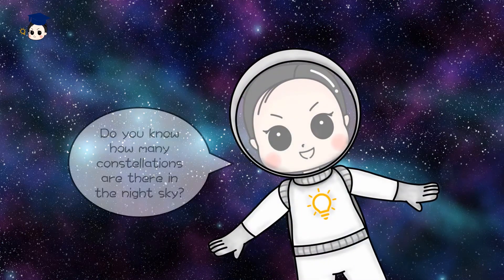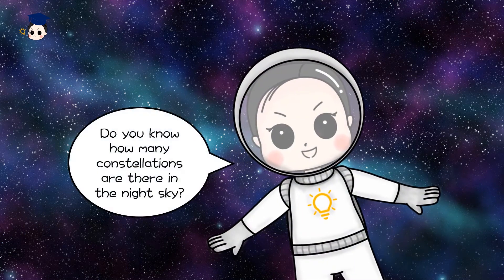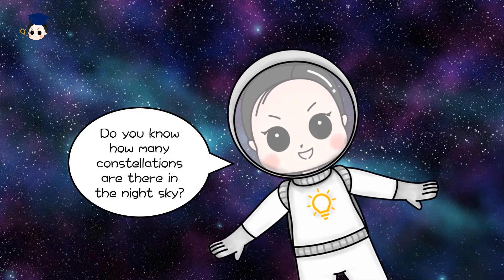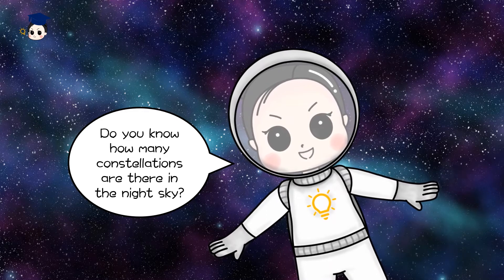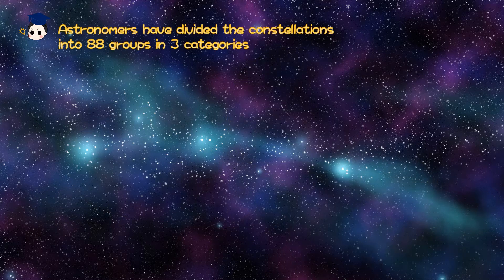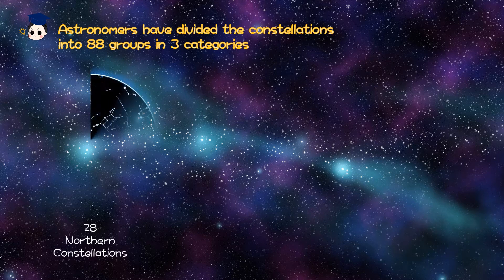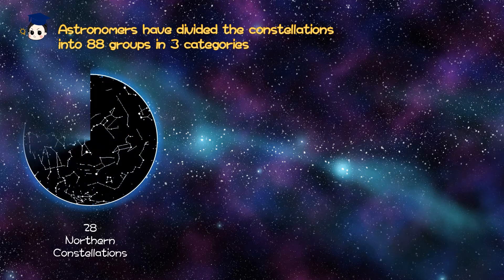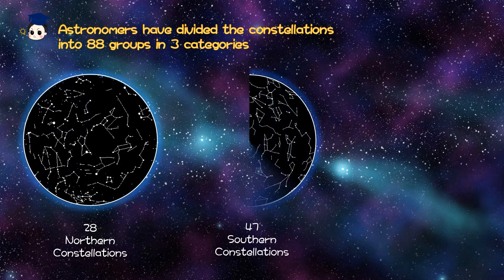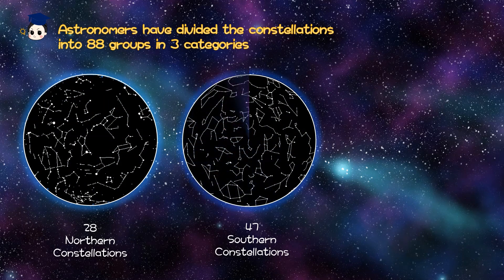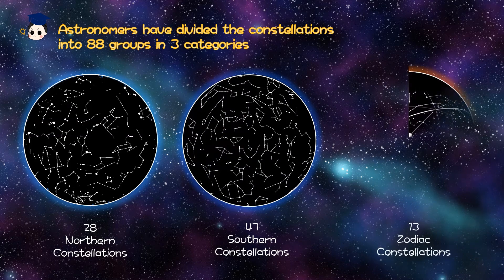Do you know how many constellations there are in the night sky? Astronomers have divided the constellations into 88 groups in three categories: 28 northern constellations, 47 southern constellations, and 13 zodiac constellations.